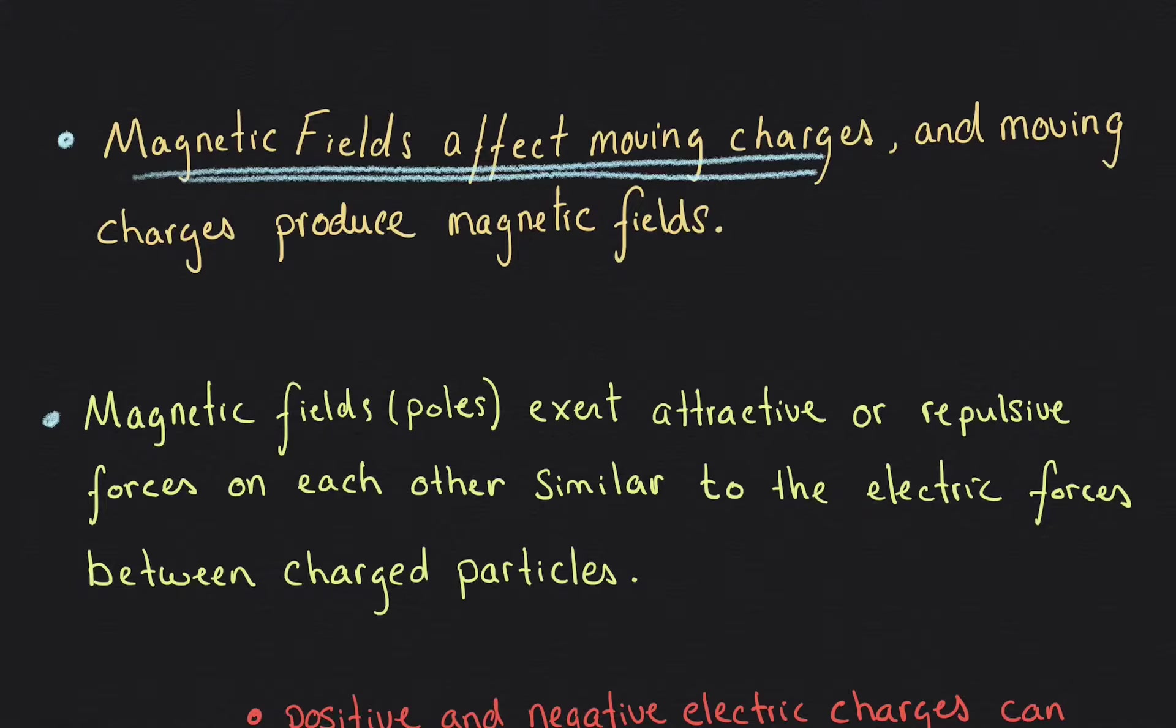Additionally, moving charges will produce magnetic fields. So in this case, once you have a moving charge, that moving charge will create its own magnetic field. So these are two processes that will occur and these are two characteristics that we will focus on in the lecture worksheet.